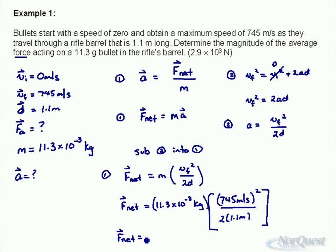You should get a final answer of 2850.8. Going back to significant digits, the barrel length is given to 2 sig digs, so we should write this as 2.9 times 10 to the 3 newtons as our final answer.